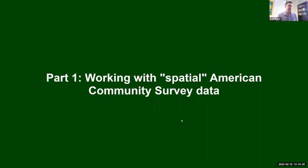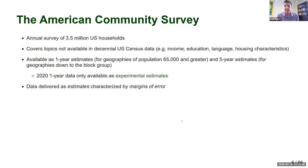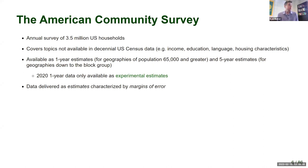Let's jump into Part 1: working with spatial American Community Survey data. For those who attended last week, this will be a little review, but I want these workshops to be self-contained. For those who are new today, I'm going to give a brief introduction to the American Community Survey — the data resource from the United States Census Bureau we're learning about today. The ACS is an annual survey of about three and a half million US households, covering maybe 10 to 11 million Americans.